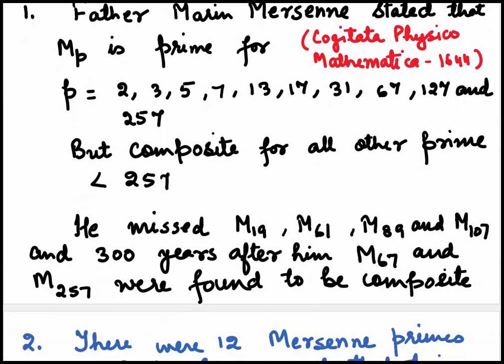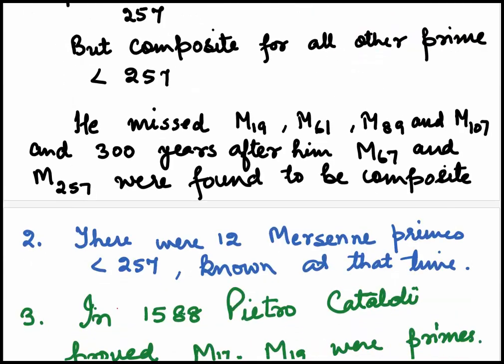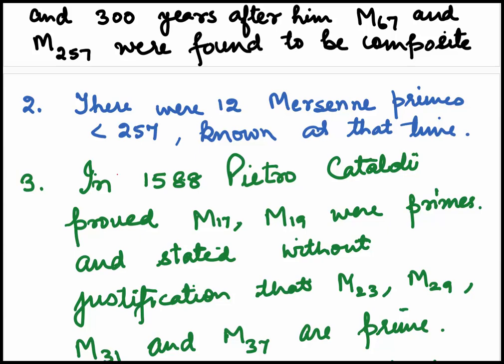He missed that M19, M61, M89, and M107 are primes. And 300 years after him, M67 and M257 were found to be composite. There were 12 Mersenne Primes less than 257 known at that time.